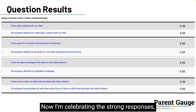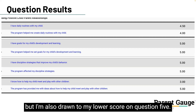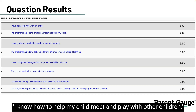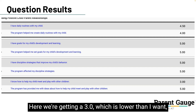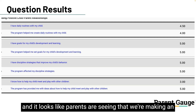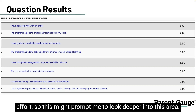Now I'm celebrating the strong responses, but I'm also drawn to my lower score on question five: 'I know how to help my child meet and play with other children.' Here we're getting a three, which is lower than I want, and it looks like parents are seeing that we're making an effort. So this might prompt me to look deeper into this area.